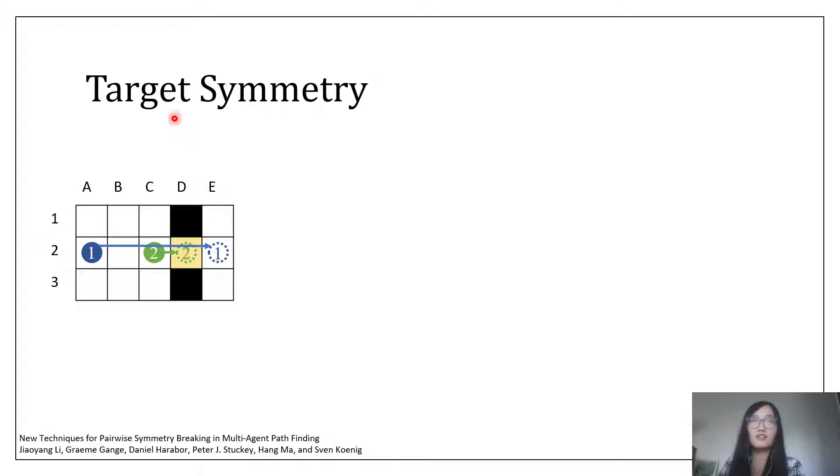Another symmetry is called target symmetry. It happens when the shortest path of one agent travels through the target location of the second agent, when the second agent has already reached its target location. Like in this example, the two agents collide at this location at time step 3.